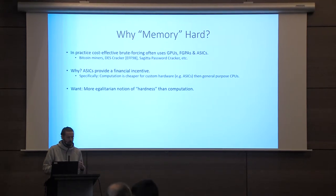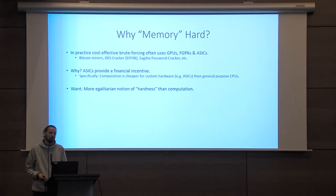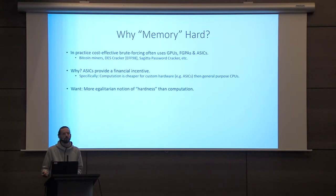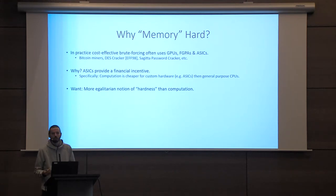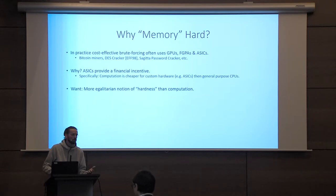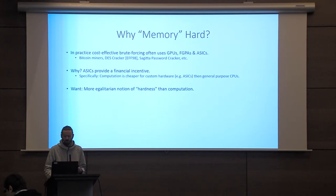The reason is that for a lot of types of computation, ASICs provide a financial incentive. What that boils down to is that ASICs give you much more computation — in terms of rate of computation per dollar spent — compared to a general purpose CPU. Sometimes on the order of 10,000 times more. This is not good for us. We want something that's more egalitarian, with less of a gap between the rate of computation for an adversary versus an honest user on a general purpose CPU.